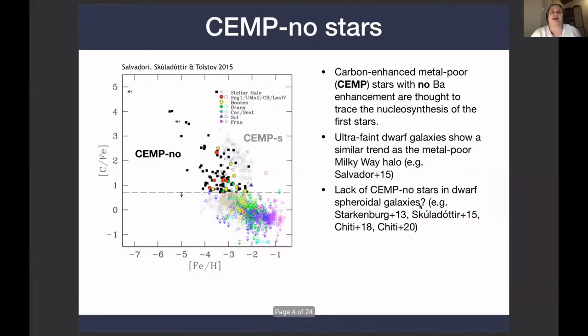What are CEMP-no stars exactly? These are carbon-rich metal-poor stars that are believed to show the nucleosynthetic signatures of the very first metal-free stars. You can see them here on the plot in black points for the Milky Way. Contrary to the CEMP-s sisters, these are not primarily in binary systems.